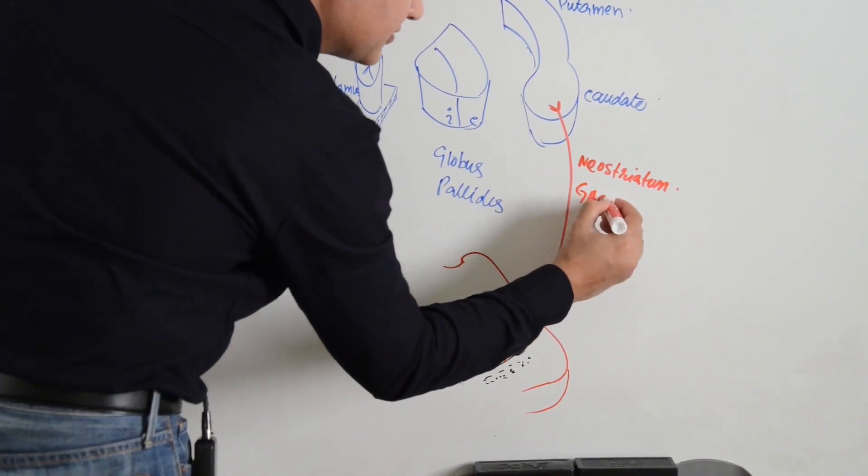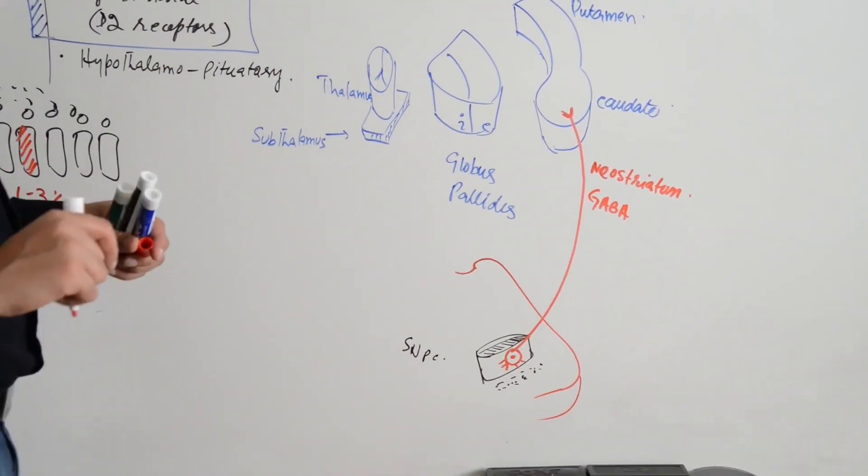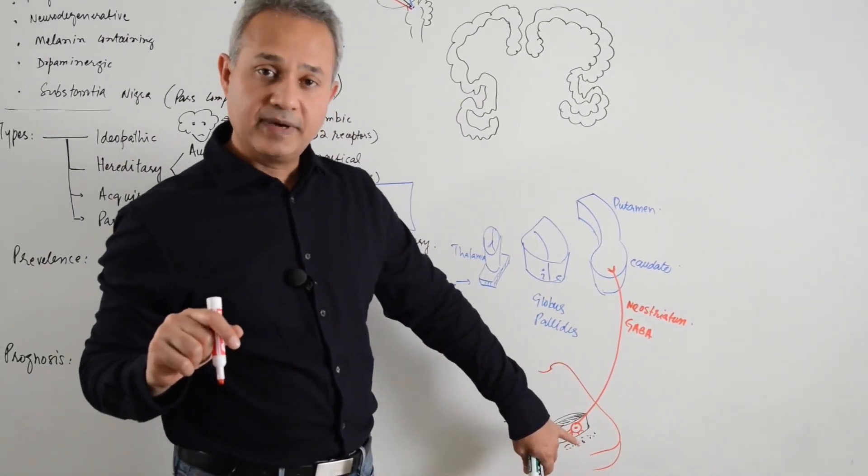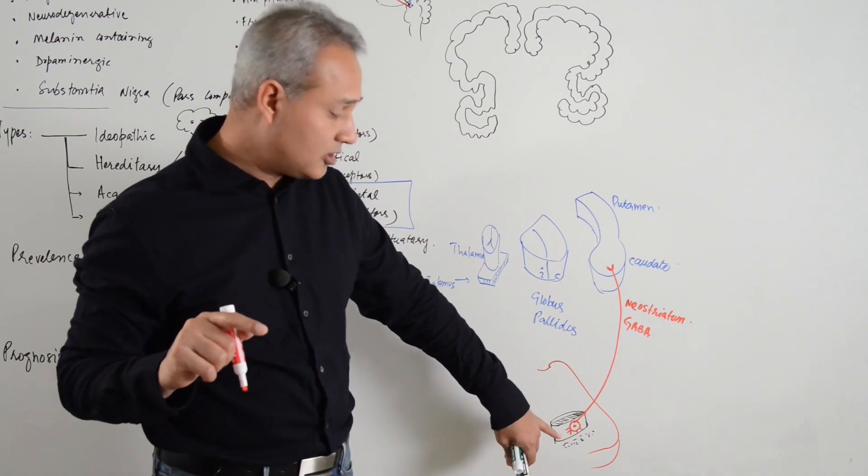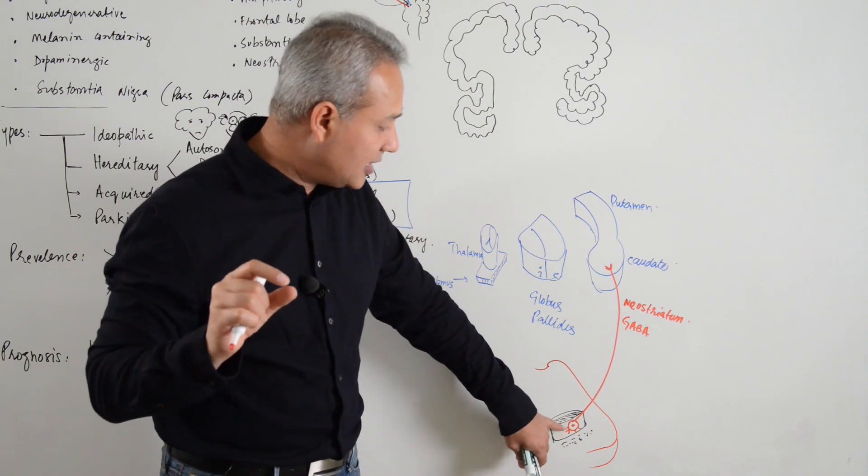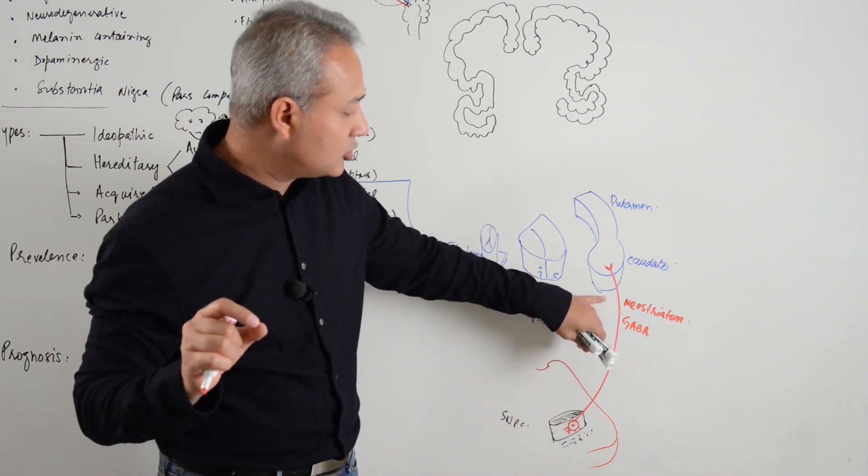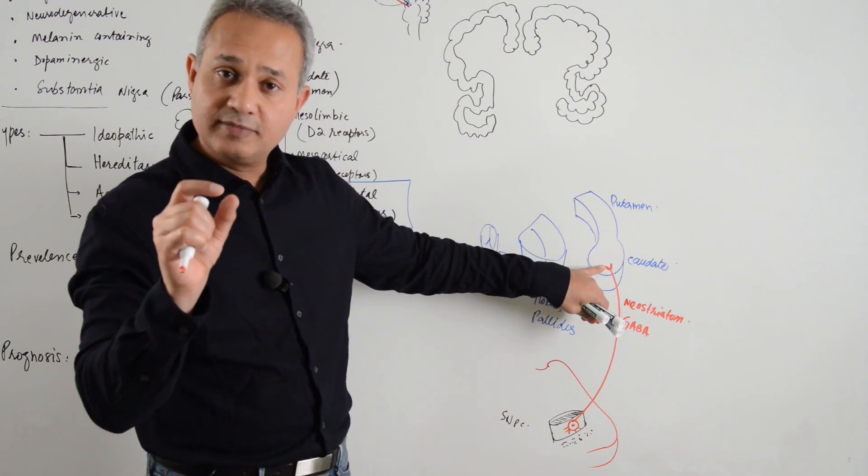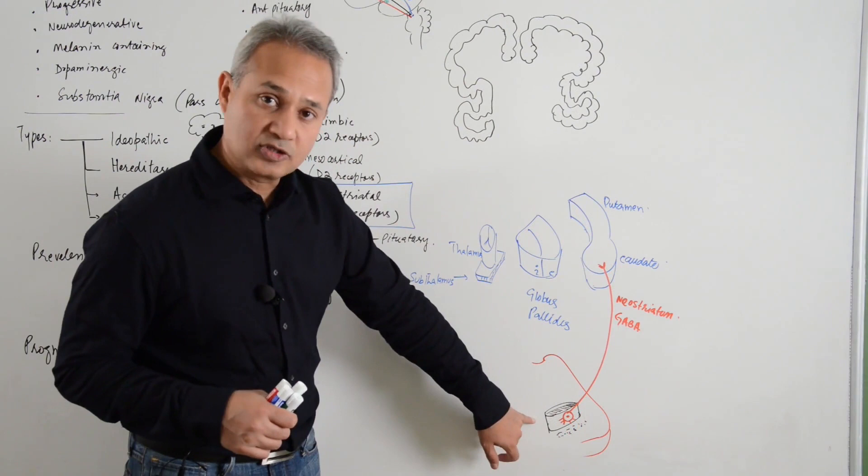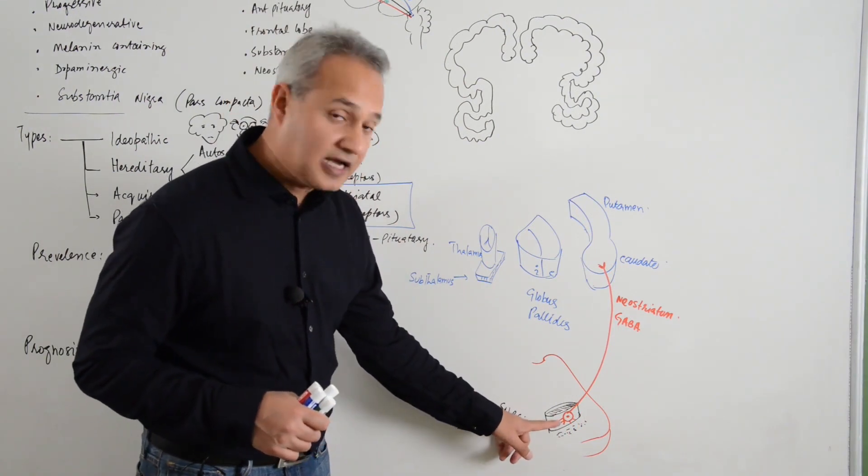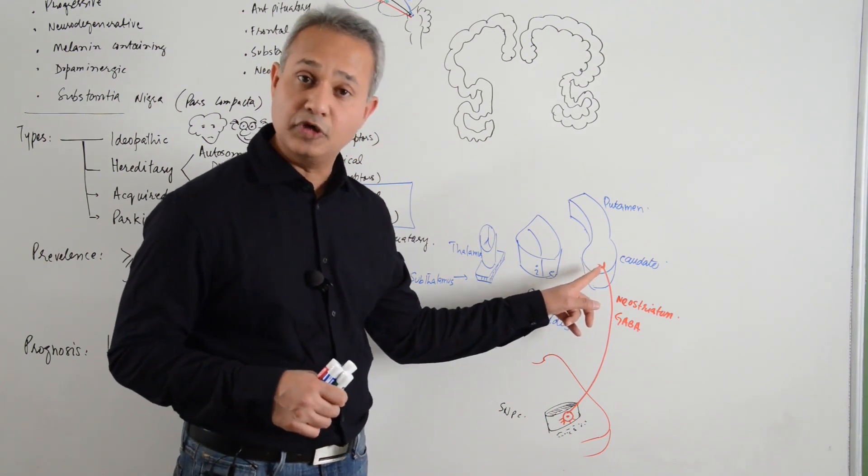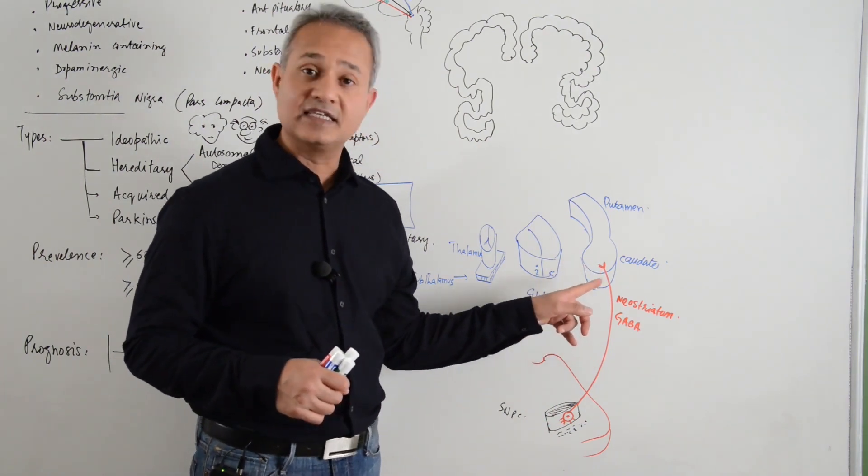This is a GABAergic neuron. What that means is in the substantia nigra pars compacta, the neuron cell body forms GABA. Then that GABA transmits all the way through the neuron and comes back to the nerve terminal where it is released. The substantia nigra pars compacta forms the GABA here in the neuron cell body. Then that GABA comes in here and is released on the neostriatum. This GABA is inhibitory.